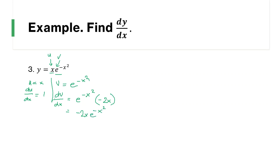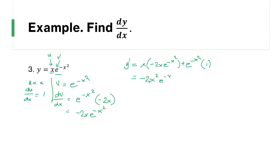After identifying u, v, and their derivatives, we solve y prime using the product rule: u·dv + v·du. That gives us x · (-2x · e^(-x²)) plus e^(-x²) · 1. Simplifying: x times negative 2x gives negative 2x², so we have -2x²·e^(-x²) + e^(-x²).